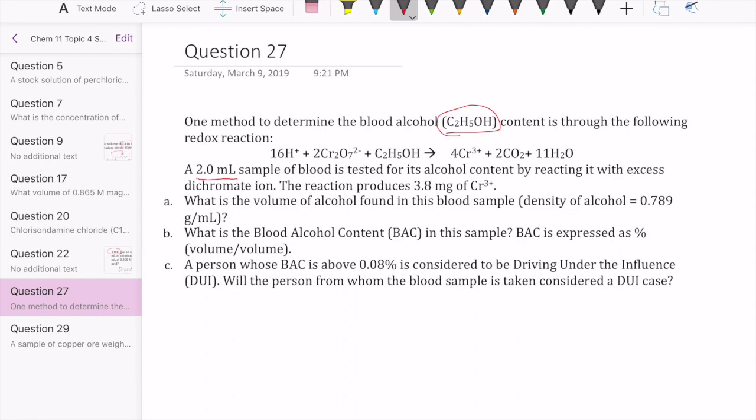So there are three different reactants. In the end, we produce some products. One of the products, in this case, the chromium ion is measured, and that has a mass of 3.8 milligrams. The question is, first, what's the volume of alcohol that you have in the blood sample, if you're given the density?